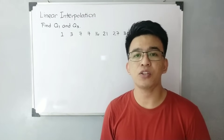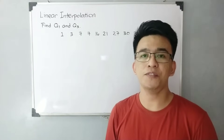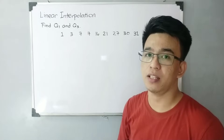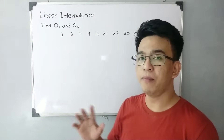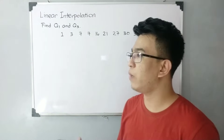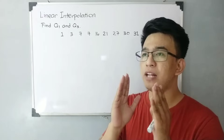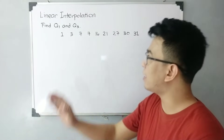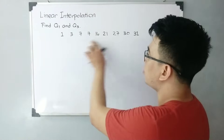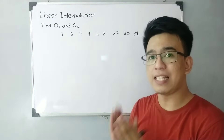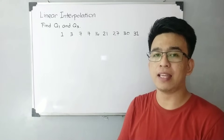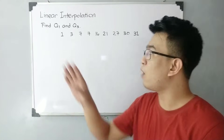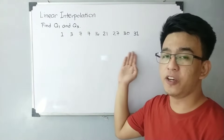Let's move on with the second method: linear interpolation. With the Mendenhall and Sinich method, the quartile values are found directly within the dataset. But with linear interpolation, it is possible that the lower quartile, middle quartile, or upper quartile falls outside the dataset values — that is what will happen here.